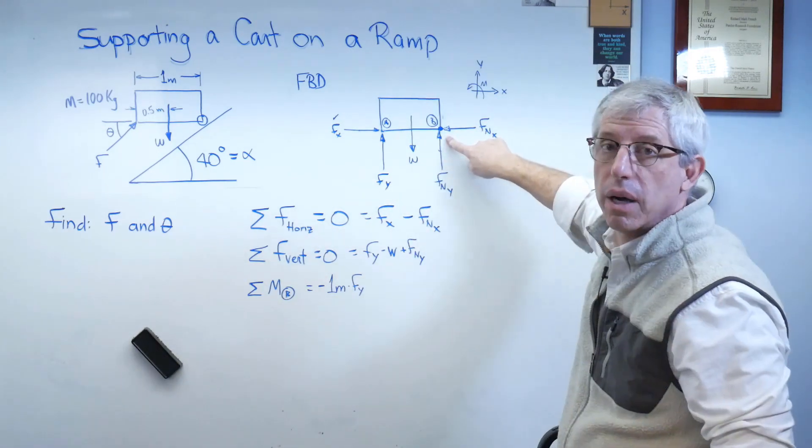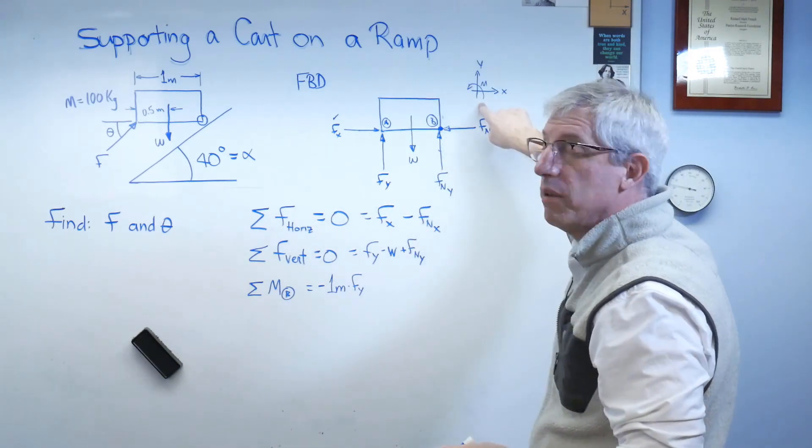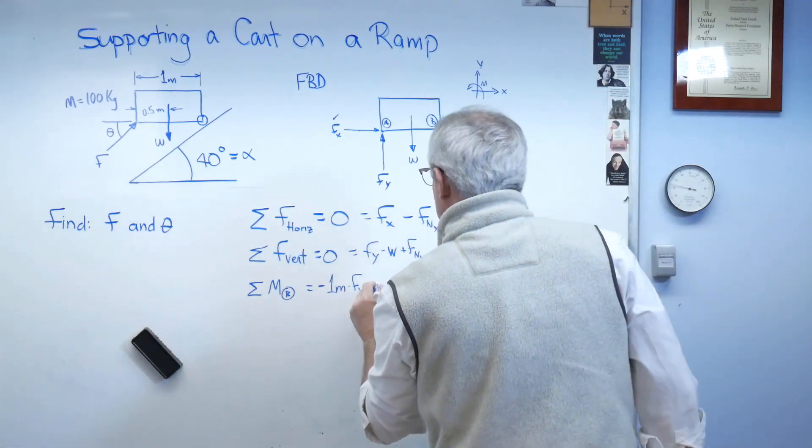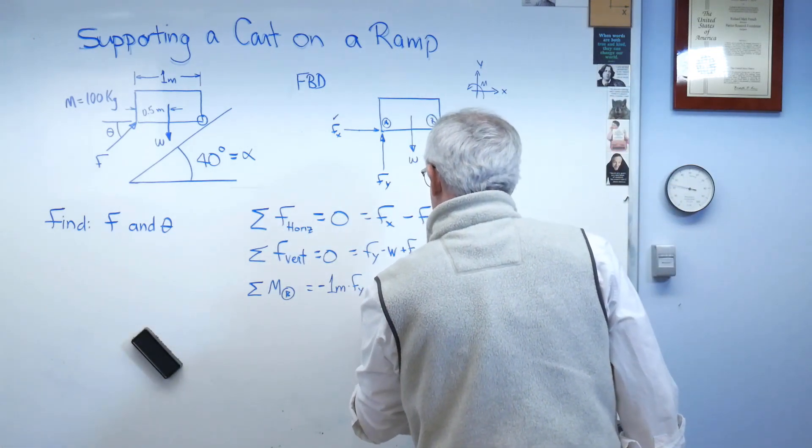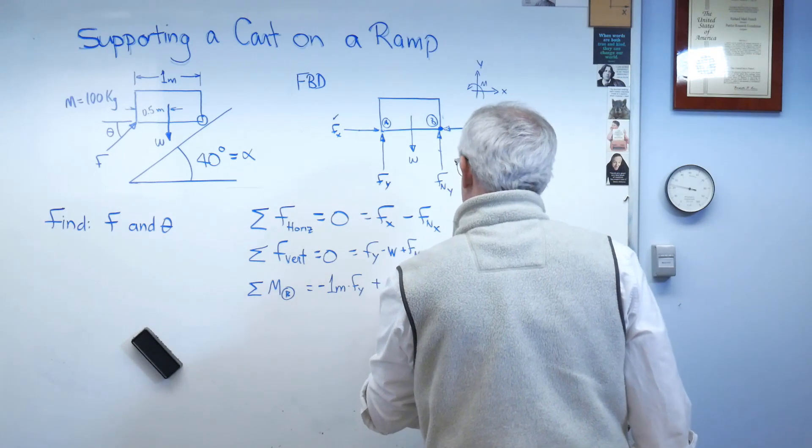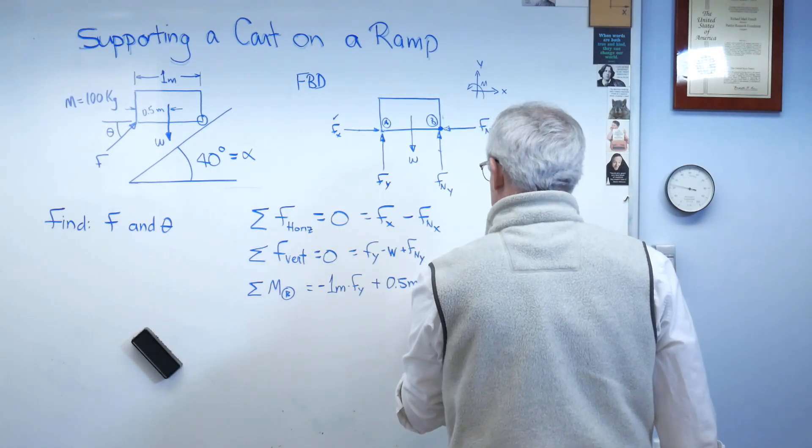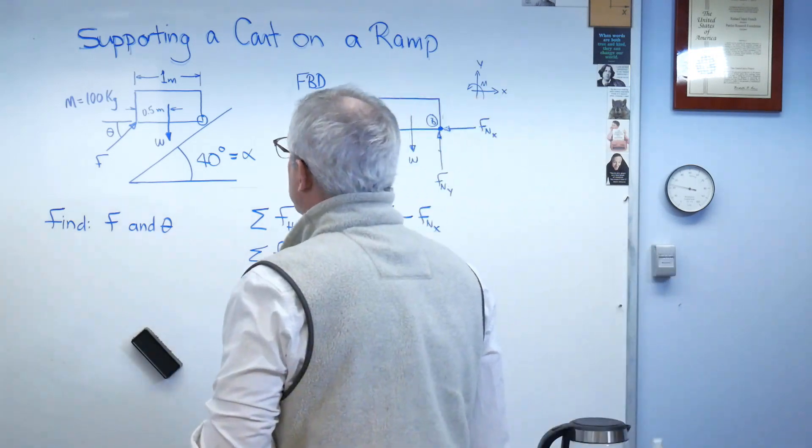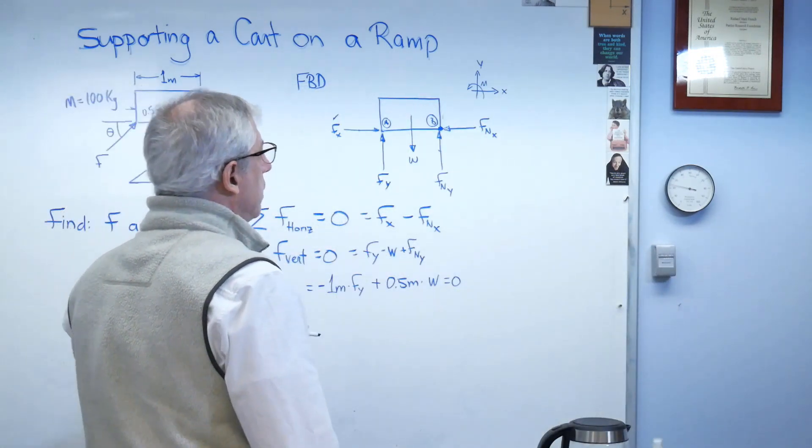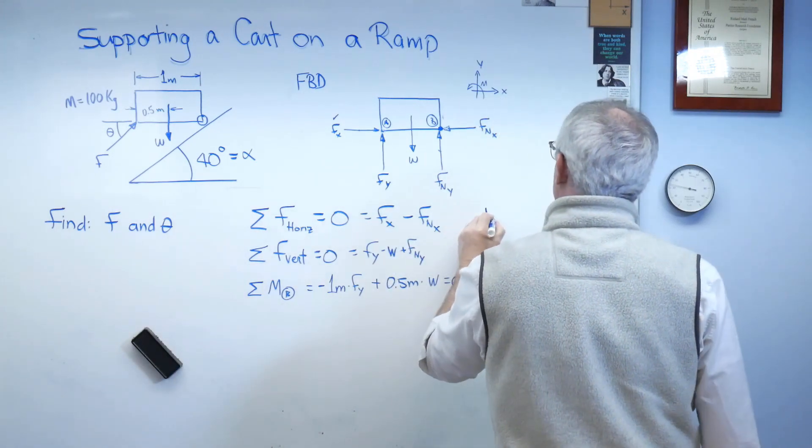About this point, W tries to rotate the box counterclockwise, which I've decided is positive, so 0.5 meters times W, and that all equals zero. All right, let's write down some other stuff here.